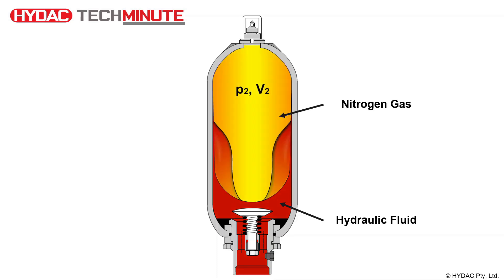As the system pressure increases, the bladder and nitrogen gas continue to compress, which results in more hydraulic fluid being present in the accumulator. At this point the accumulator is storing hydraulic fluid at the maximum system operating pressure, P2. If the hydraulic pressure in the system drops, the bladder will expand, forcing hydraulic fluid from the accumulator back into the system.